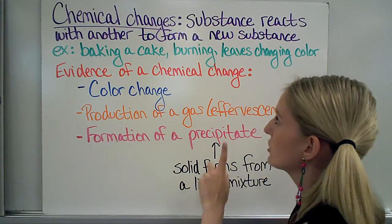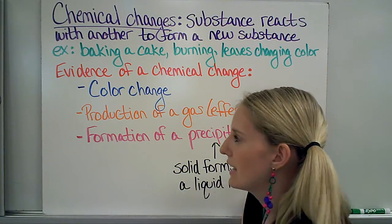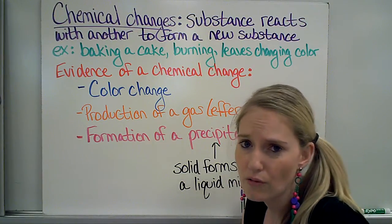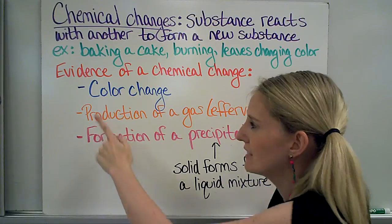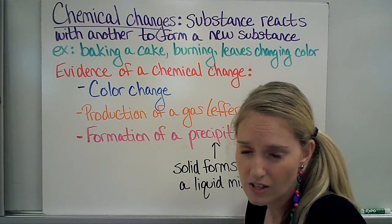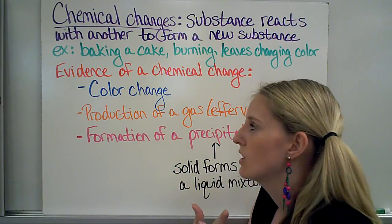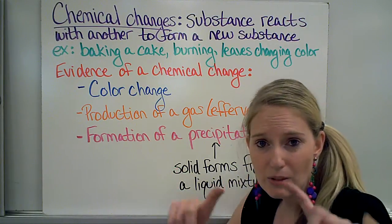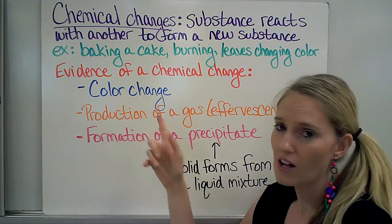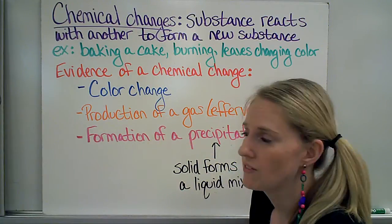The first one is a color change, like the leaves changing color up here. Now that's not always going to be the case. If I have a glass of water and I add a couple of drops of red food coloring to it, that's a color change, but that's not going to be a chemical change because all I've done is just put two things together. That's a physical change. If I put two clear liquids together and they turn purple, that would be a good example of a color change, so you've had a chemical change happen because of that.